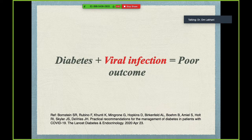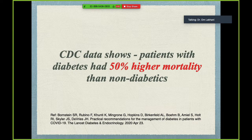Anyone who has practiced endocrinology, internal medicine, infectious disease, pulmonology, or critical care would know that when a patient with diabetes mellitus has a viral infection on top of that, it leads to poor outcome. I remember as an MD resident when the H1N1 infection broke out — diabetic patients showing up for admission were at very high risk of mortality. The CDC data showed that patients with diabetes had 50% higher mortality than non-diabetic patients, which is quite alarming.